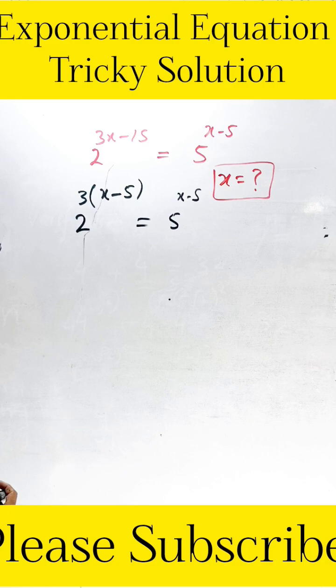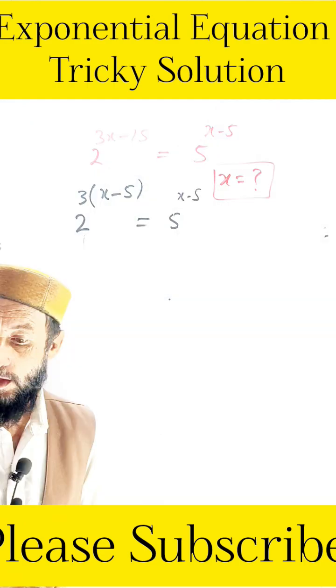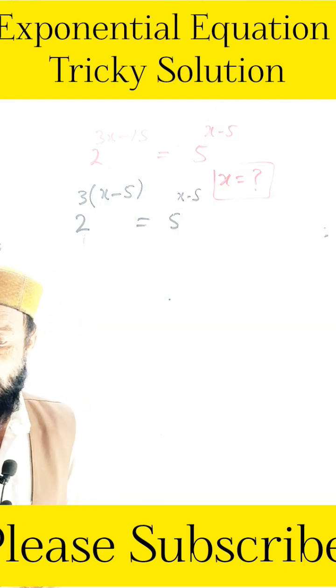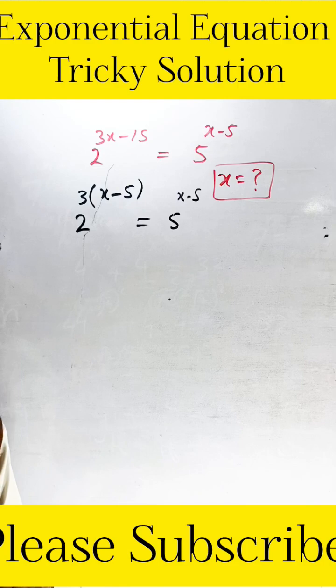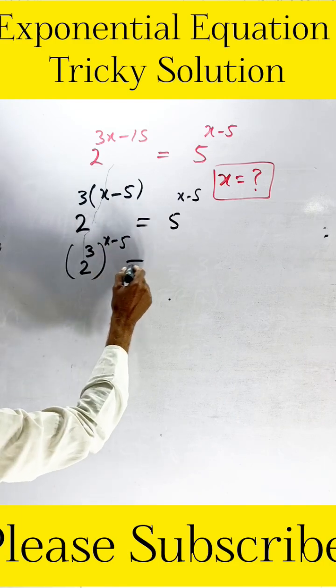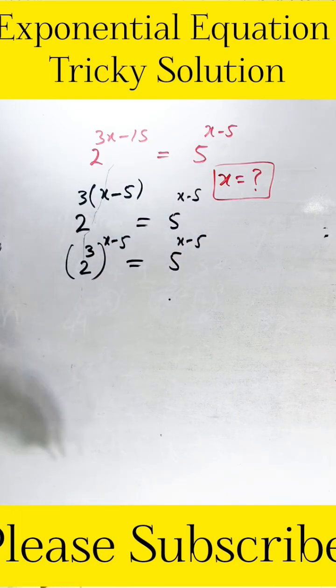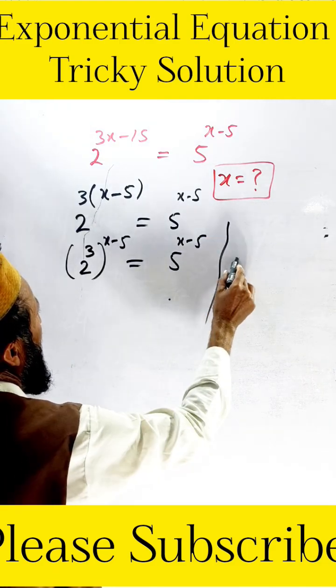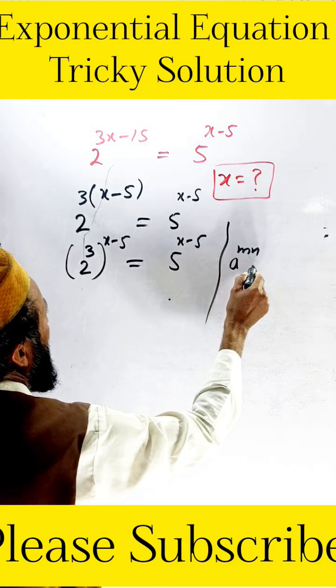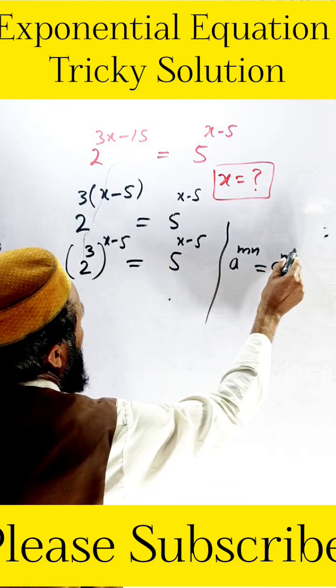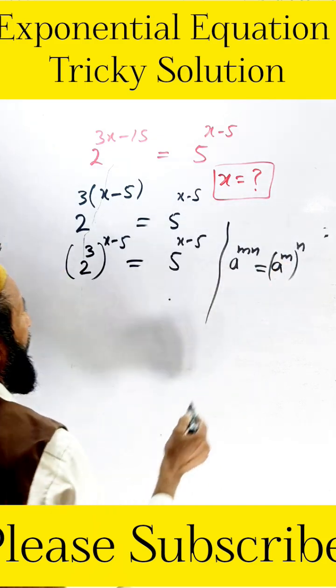Now, if we divide the same term, we can write by addition and we change their power according to their rules. If we change this one, 2 to the 3 is 8, so 8 exponent of x minus 5 is equal to 5 exponent of x minus 5. We have the rule a exponent of mn is equal to a exponent of m whole exponent of n.